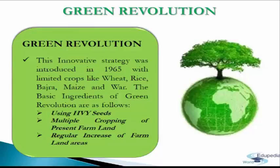This strategy was known as the New Agriculture Strategy. In the Kharif season of 1966, India adopted HYVP for the first time. This innovative strategy was introduced in 1965 with limited crops — wheat, rice, bajra, maize, etc. The basic ingredients of the Green Revolution were: using HYV seeds, multiple cropping of present farmland, and regular increase of farmland areas.